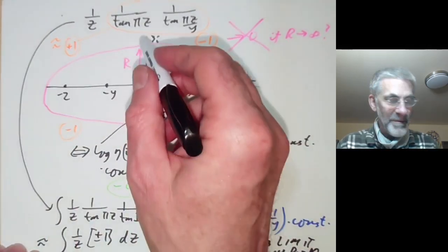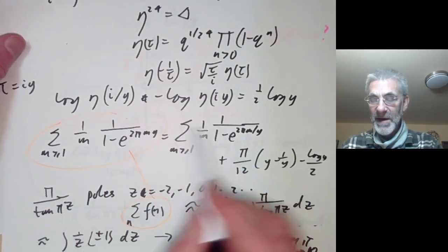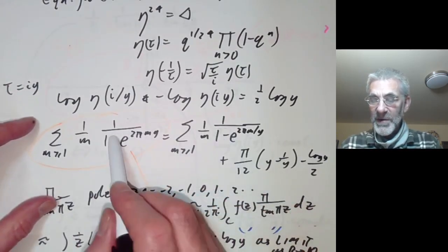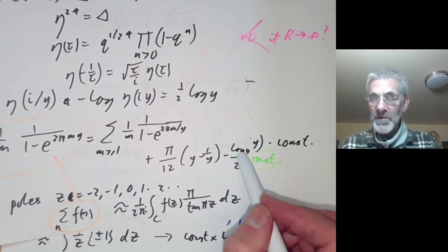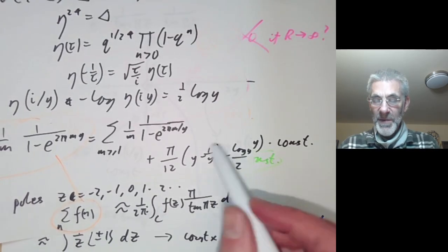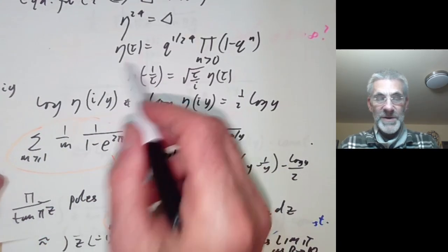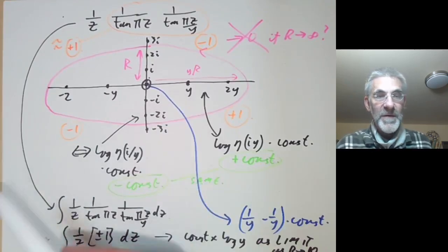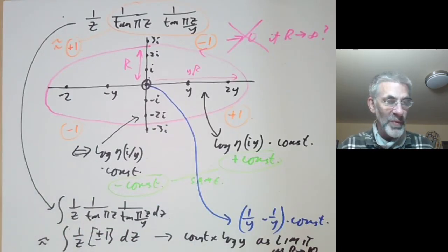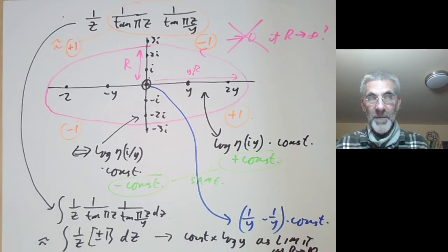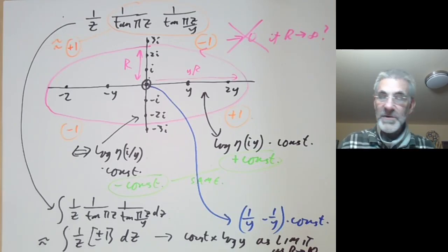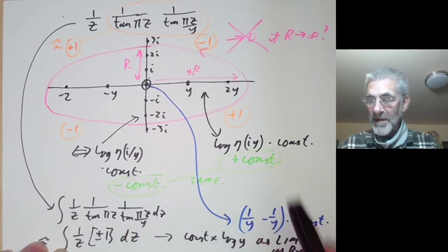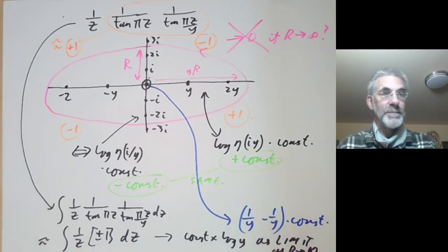To summarise: the residues on the axes give the two sum terms corresponding to η(iy) and η(i/y); the residue at zero gives the term involving y and 1/y; and the limit of the contour integral gives the log y term. This proves the functional equation, which is equivalent to proving that the discriminant can be written as an infinite product, and also equivalent to the fact that E2 is almost a modular form. Those who want an exercise can go and work out all the constants that I've been too lazy to evaluate.